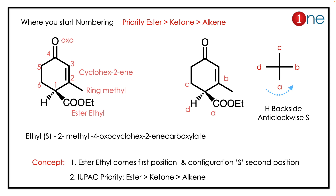The question is interesting because it involves many functional groups: carbonyl, alkene, and ester. Further, stereochemistry is also involved. You have to find the priority — the order is: ester, then ketone, then alkene. You should memorize this order. We start the numbering from the ester position: first position is ester, second position is alkene, and fourth position is the ketone.